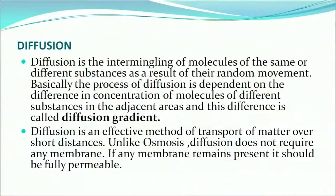What is diffusion? Diffusion is another process that helps plant roots absorb water. It is the intermingling of molecules of the same or different substances as a result of their random movement. The process of diffusion is dependent on the difference in concentration of molecules in adjacent areas, and this difference is called the diffusion gradient. Diffusion is an effective method of transport over short distances. Unlike osmosis, diffusion does not require any membrane; if a membrane is present, it should be fully permeable.